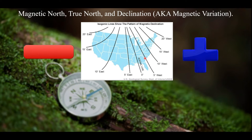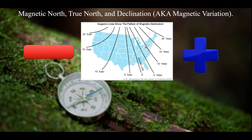For example, if you're in Pennsylvania with a 10-degree west declination and your commander gives you a bearing of 270 degrees, you must add 10 degrees, giving you 280 degrees. This accounts for the angle between true north and magnetic north, ensuring you head toward true north rather than magnetic north.